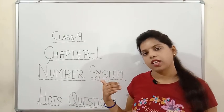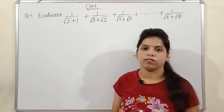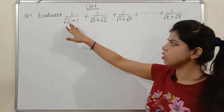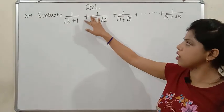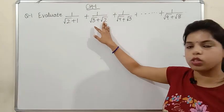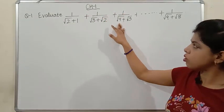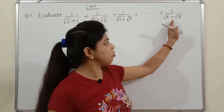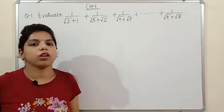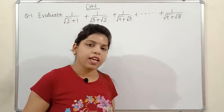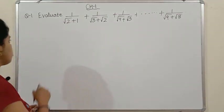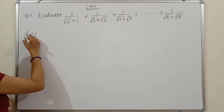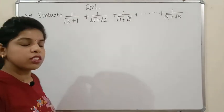Let's start. My first question is: evaluate 1/(√2+1) + 1/(√3+√2) + 1/(√4+√3), up to 1/(√9+√8). We will simplify this question. First of all, what do you observe? In every term, the denominator contains an irrational number, so you have to rationalize it.